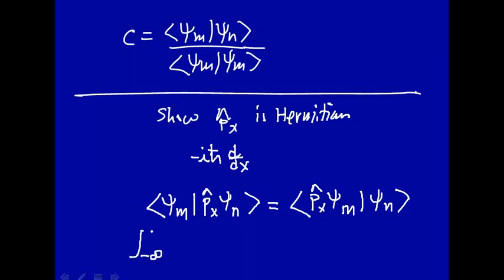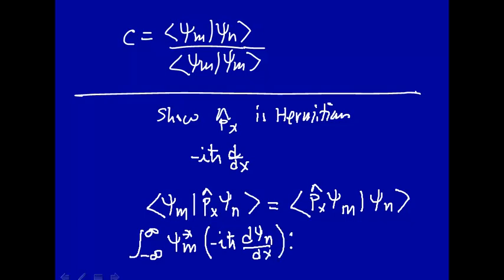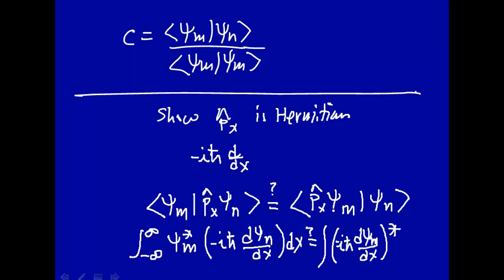Let's write the integral from minus infinity to infinity of psi_m star, then substitute in what p_x is — that's minus i h-bar — and now take the derivative of psi_n with respect to x, integrating over all x. We want to show this equals the integral of minus i h-bar d psi_m dx, complex conjugate, times psi_n, integrated from minus infinity to plus infinity.